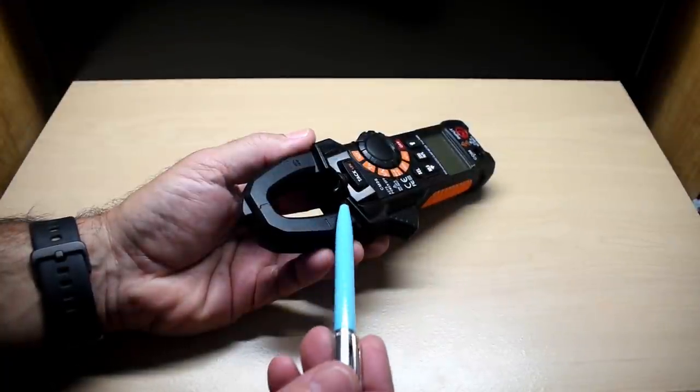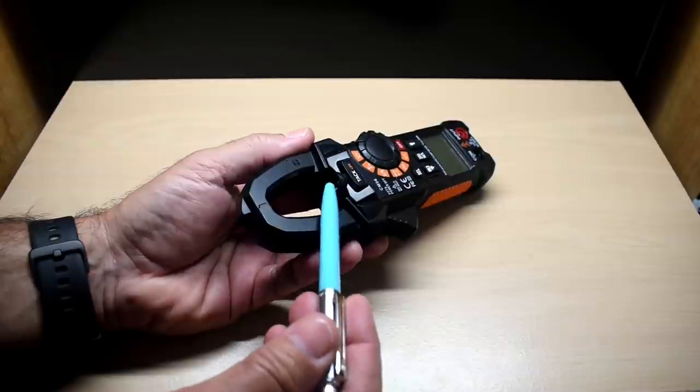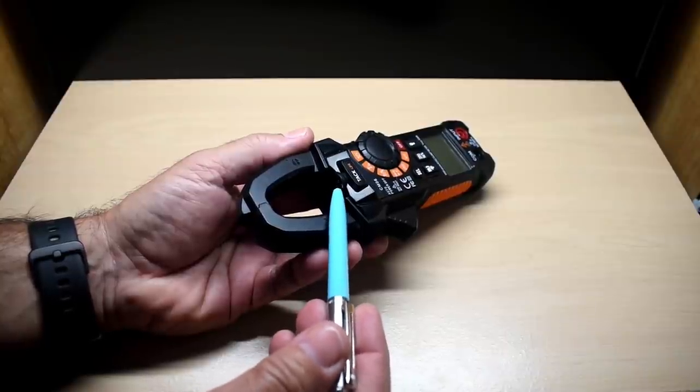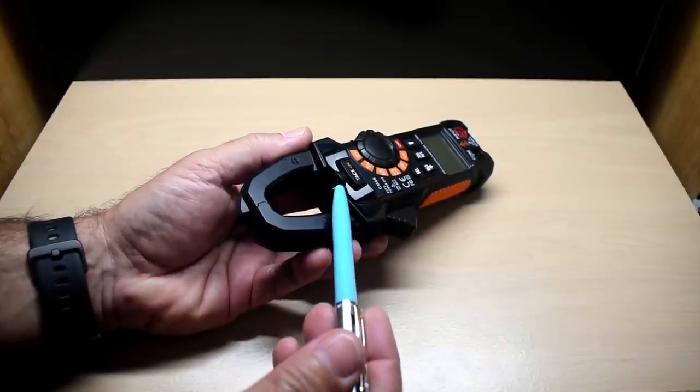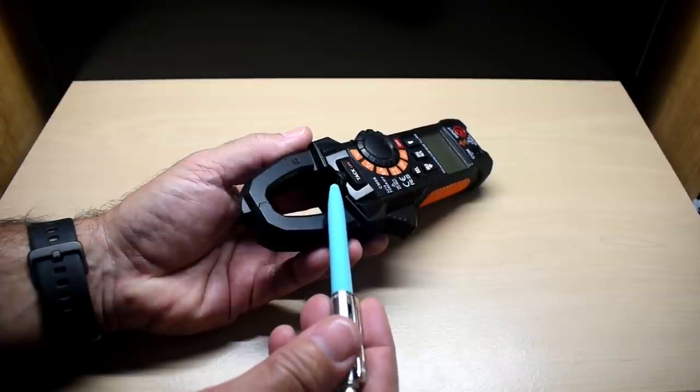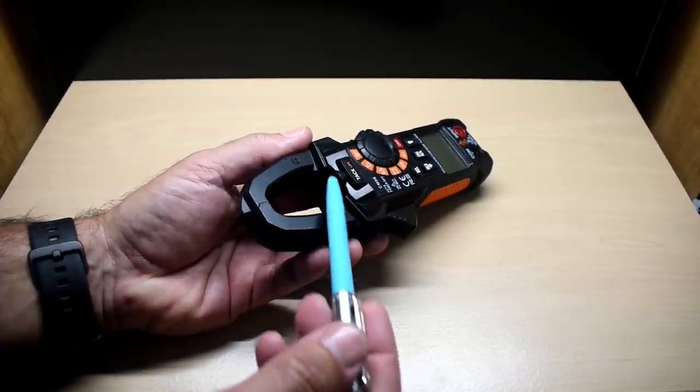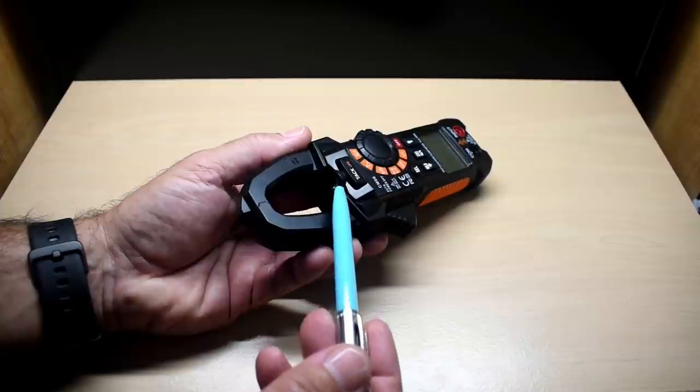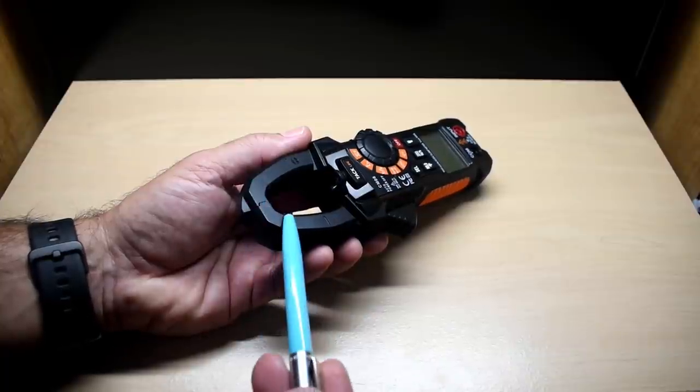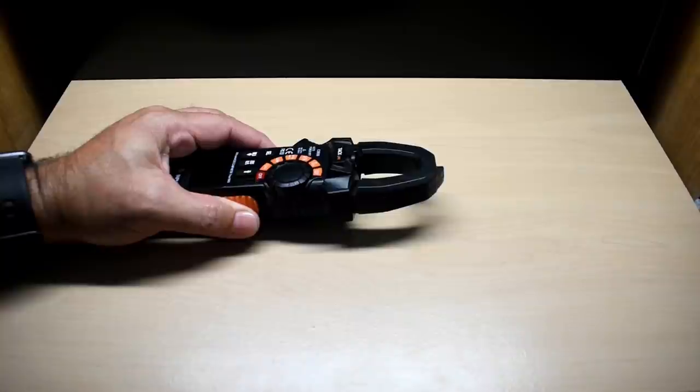On the very top of the unit right over here is an LED so it has a built in flashlight. Keep in mind it's not very bright, it's just an added feature if you're working in a tight space it'll give you some light in the area so you can clamp onto a wire for current measurement.